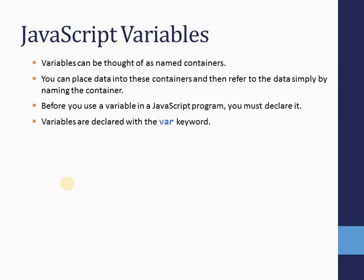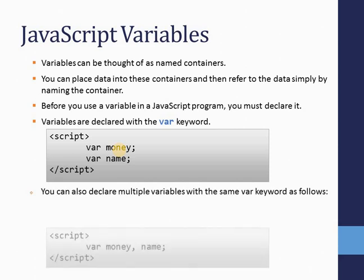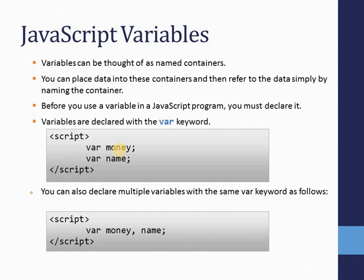Before you use a variable in a JavaScript program, you must declare it. You declare it using the `var` keyword. Here I have declared two variables: `money` and `name`, using the `var` keyword followed by the variable name. When there are multiple variables, you can declare them using just a single `var` keyword — you don't need to write the `var` keyword multiple times.